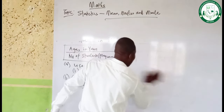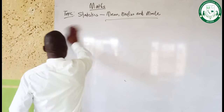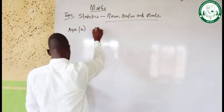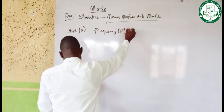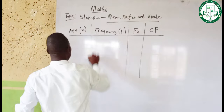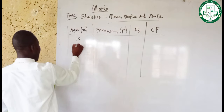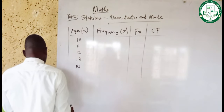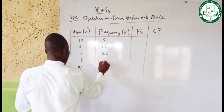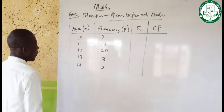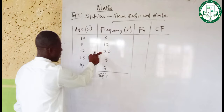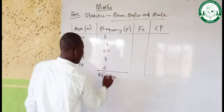In the course of solving this problem, we will fix our table. We have column H for age (X), frequency (F), F times X (FX), and cumulative frequency (CF). The ages are 10, 11, 12, 13, and 14 with frequencies 3, 12, 20, 30, and 2 respectively. We have to find the summation of F: 3 plus 12 gives 15, plus 20 gives 35, plus 3 gives 38, plus 2 gives 40. So summation F equals 40.